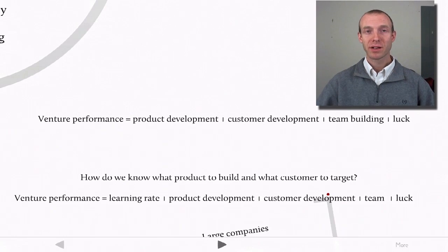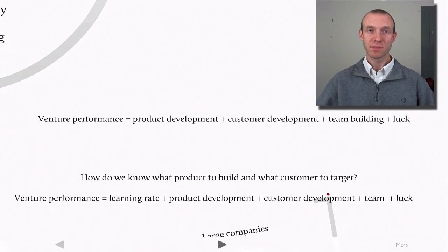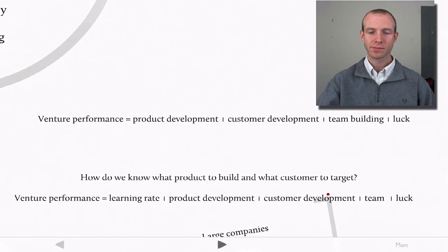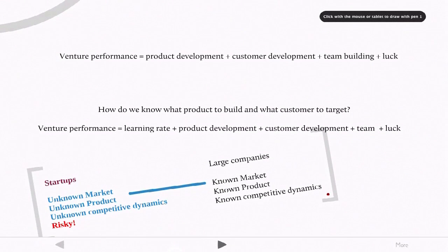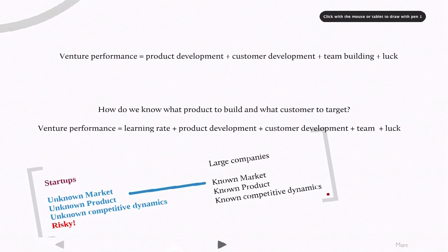But how do we know what product to build and what set of customers we should target? This leads to the next step in the formula, which is that venture performance is about your learning rate plus product and customer development along with the characteristics of the team and of course a bit of luck. And so this learning rate has to be quick enough to learn enough about what product customers want and who those customers are for the venture to be successful. So let's talk about this in a bit more detail.